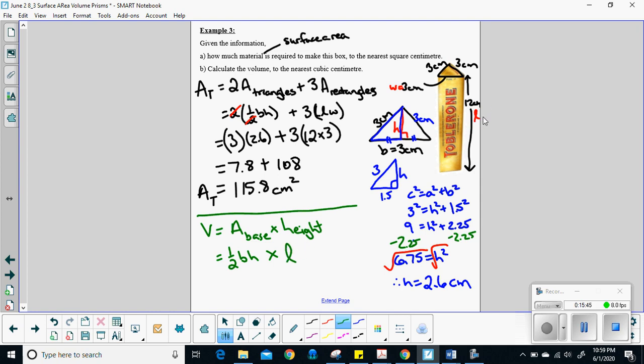Half times base times height times this whole height here. So that's, we've already given it the letter L here. So the height is like how you stretch it out. So let's see. One half times base of the triangle is 3. Height of the triangle is 2.6.